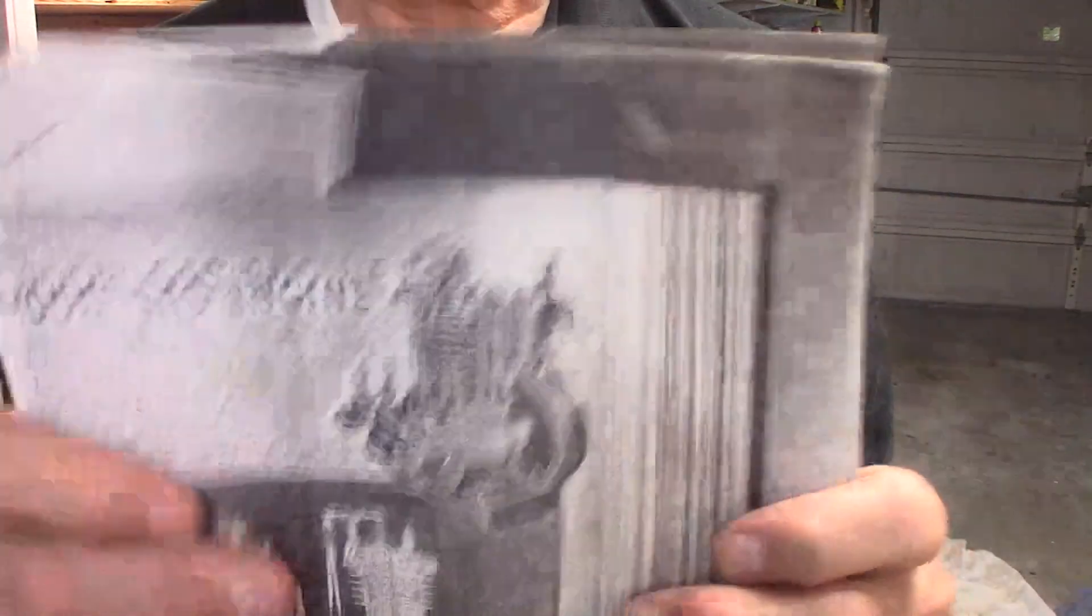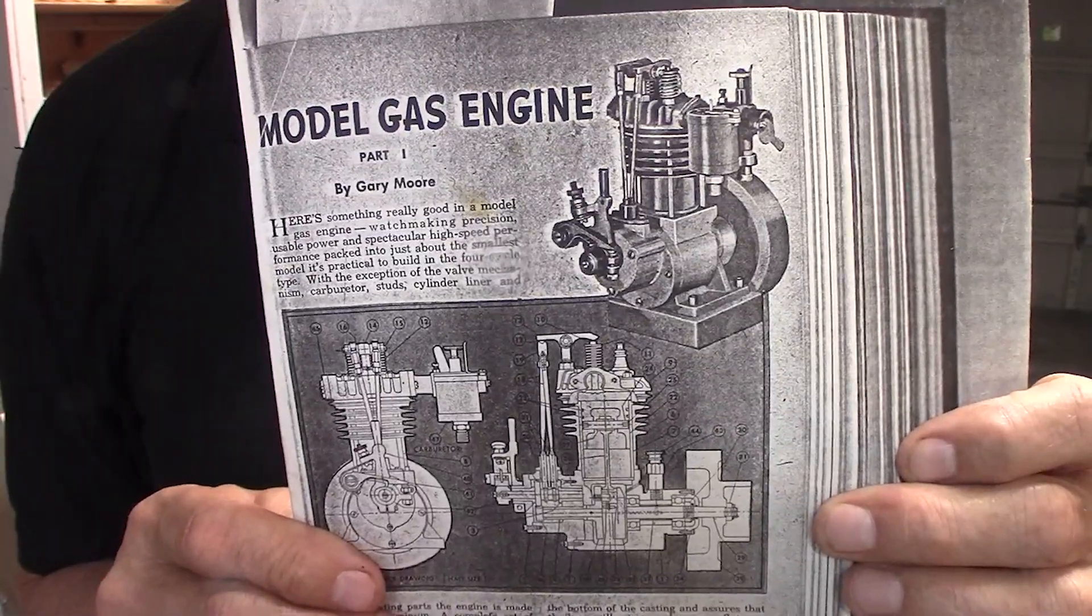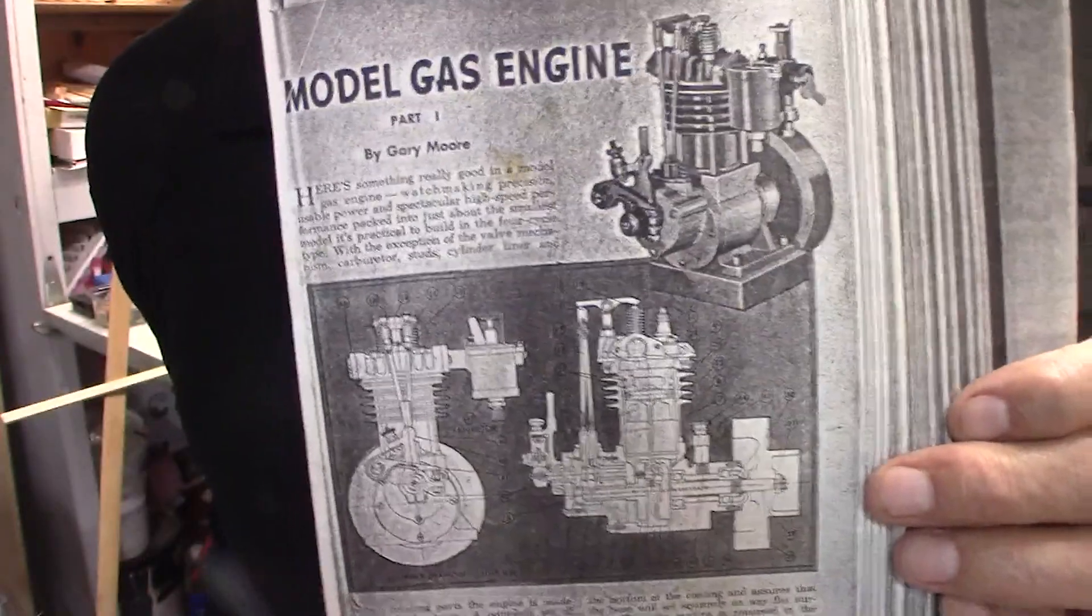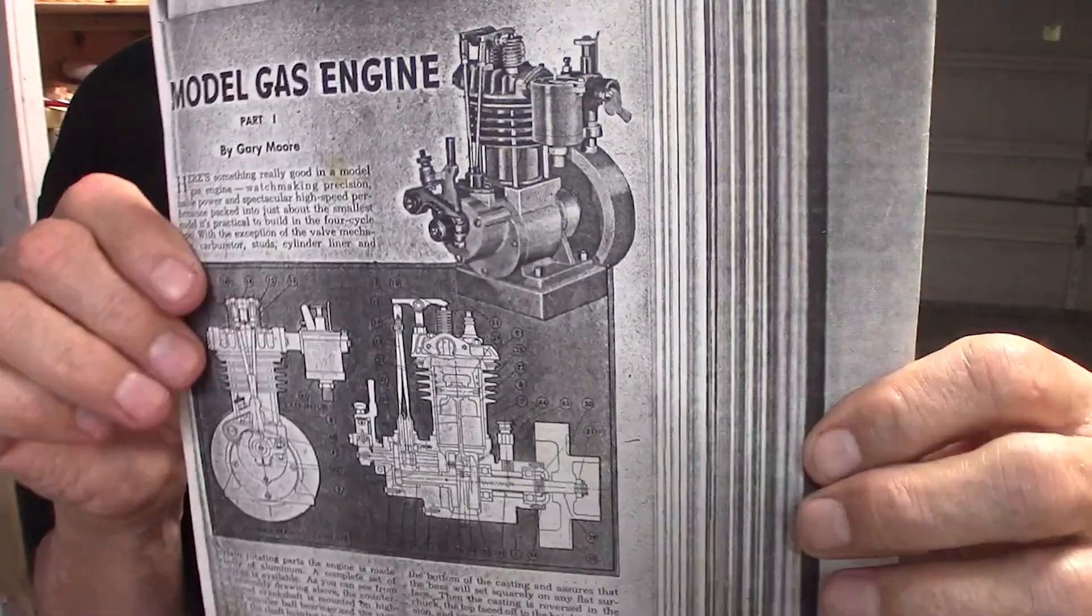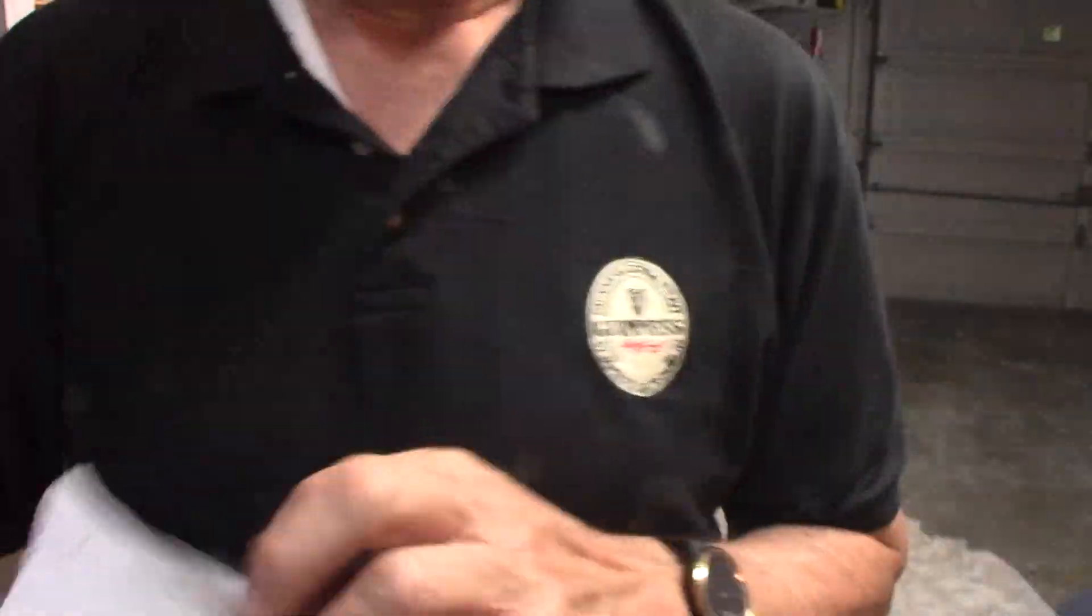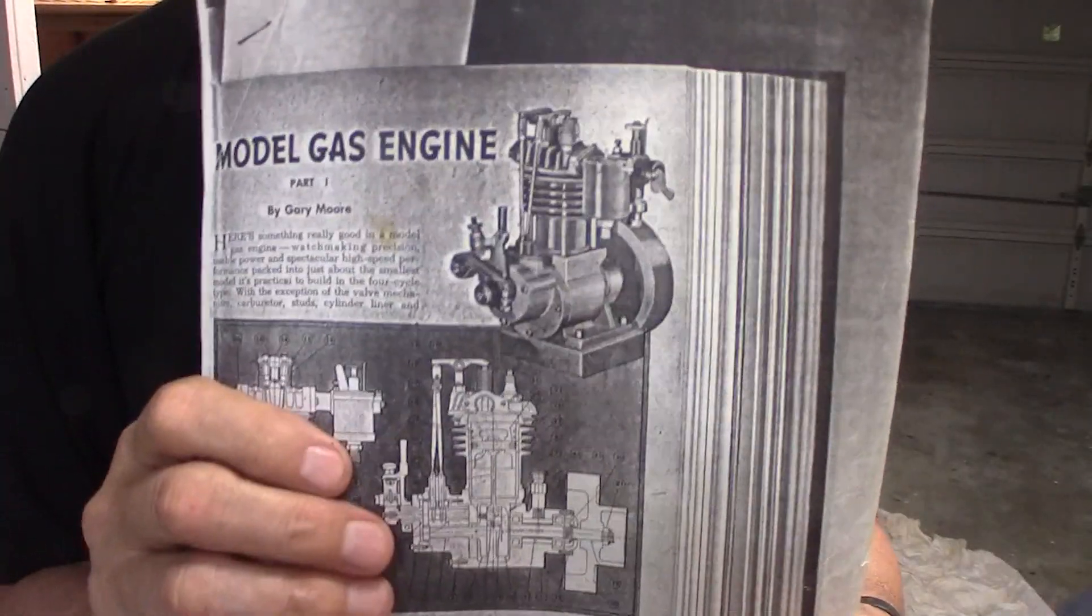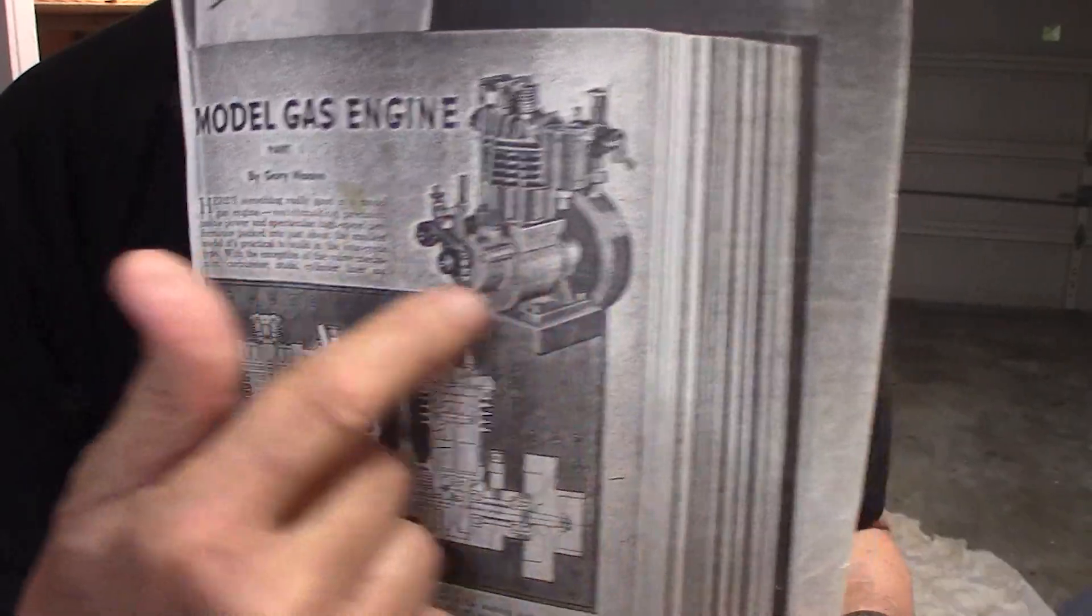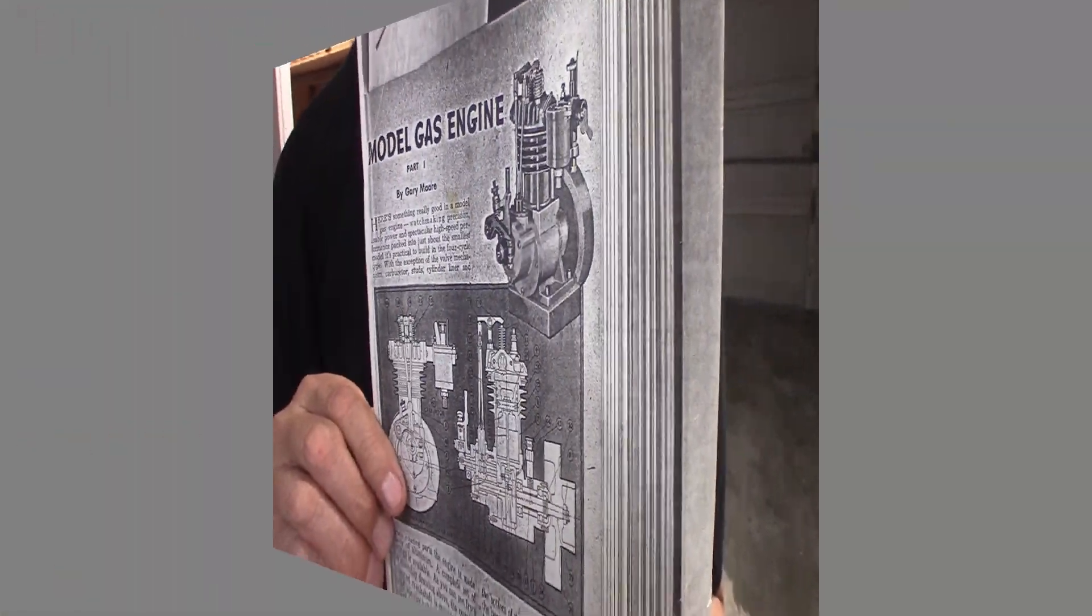This is Popular Mechanics 1946 October November issues. There was a two-part article - October and then November. Originally it was designed to run smaller class model tether boats, but it is air cooled. It would be pretty easy to change it over to water cool. All these Popular Mechanics magazines are now available online. You can go online for free. If you type in model gas engine in the search archives of Popular Mechanics magazine.